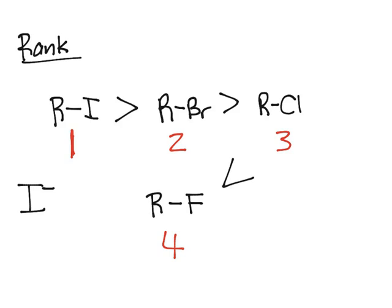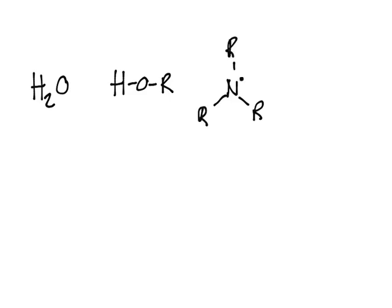But it's important to remember one thing is that leaving groups are not always going to be ions. For example, like I minus. You could have leaving groups such as water or alcohols. So, that's H-O-R. Amines. That's just a nitrogen bonded to three R groups with a lone pair. And so on. So, not all of the weak bases or that are common leaving groups have to be ions. That's one thing to remember.